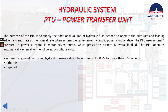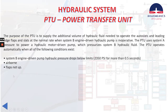First, system B engine driven pump hydraulic pressure drops below limits at 2350 psi for more than 0.5 seconds. We are airborne and the flaps are not in the up position. You need to meet all these three conditions in order for the PTU to operate.